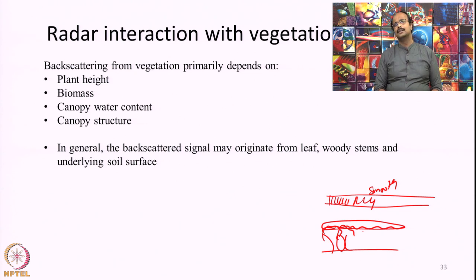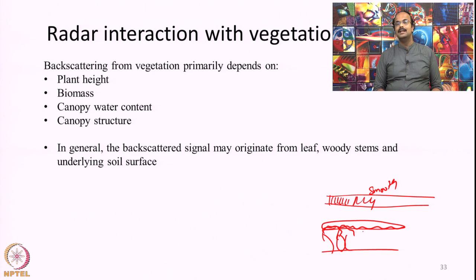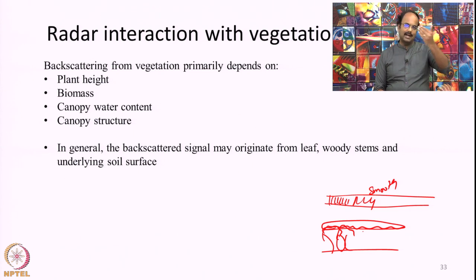Unlike optical remote sensing where reflection or emission happens only from the top millimeters of the surface, in microwave remote sensing the backscattered signals will not only come from the canopy or leafy part but may also come from stems, branches, leaves, and even the soil underneath the canopy cover — depending on the wavelength and canopy water content. The signals in radar images may give us information not only about leaves but also about features present underneath the canopy, and this must always be kept in mind for vegetation monitoring applications.